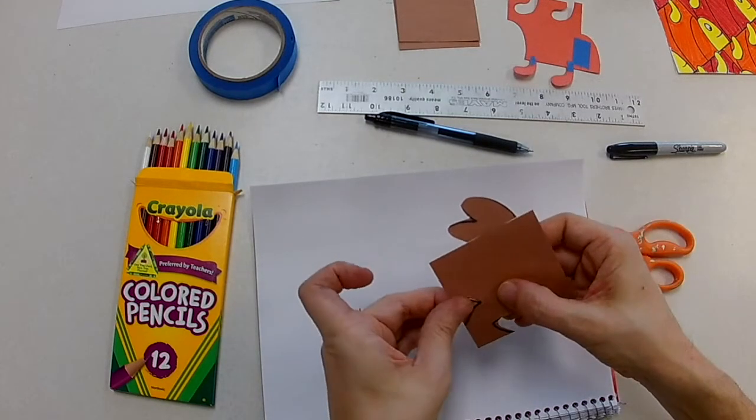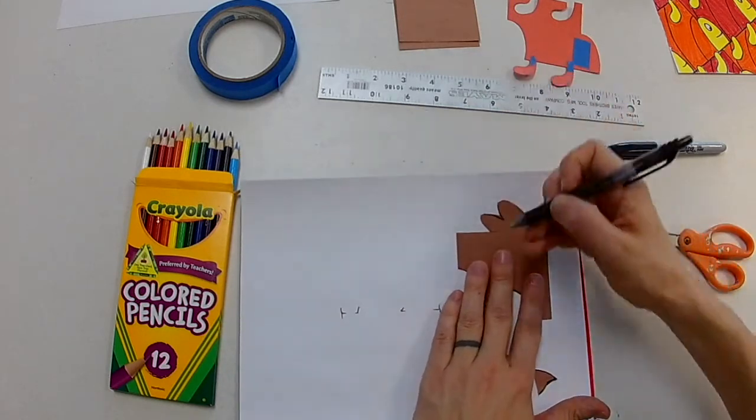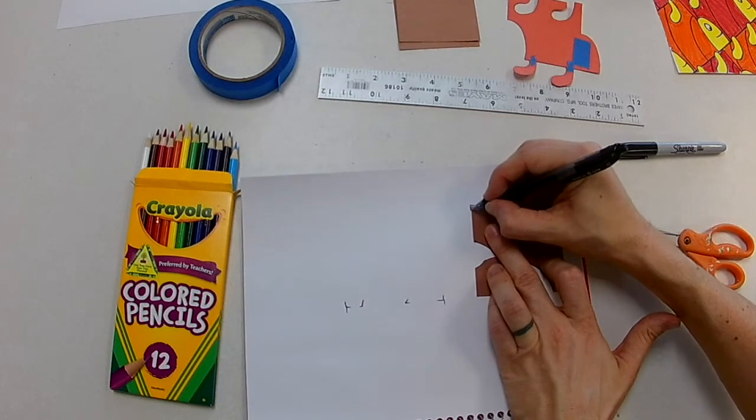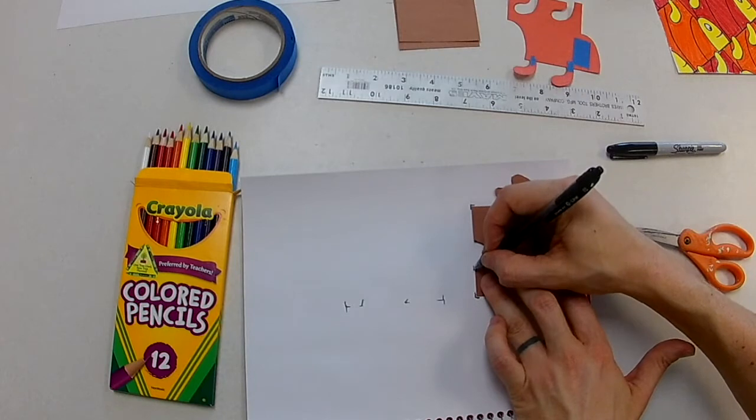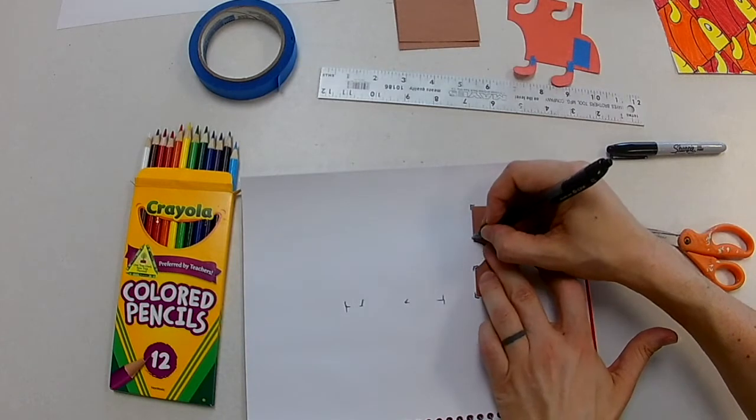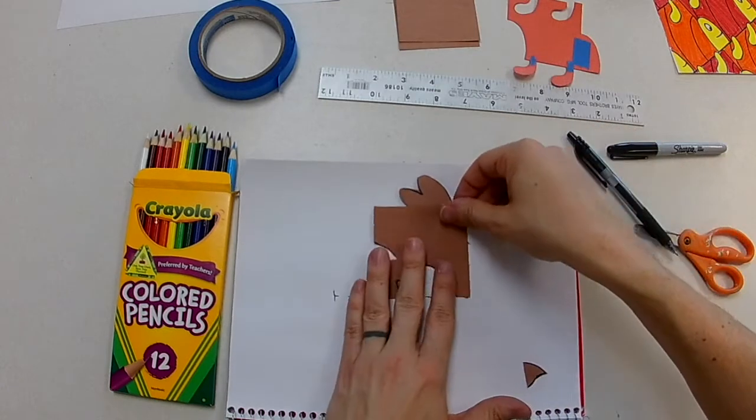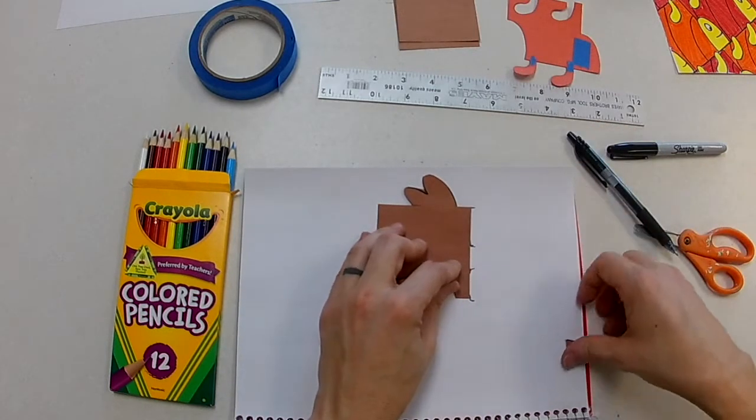And then I'm going to do the exact same thing where I take it, I measure out. Okay, so the top of the square is right here at that corner, the bottom is at that corner, and then the beak goes in right there. I move my box back, I line it up.